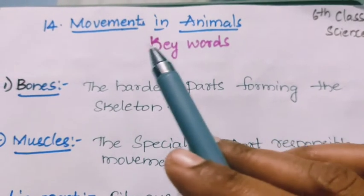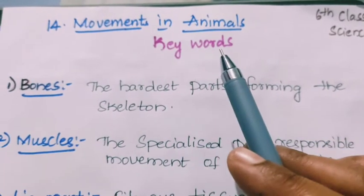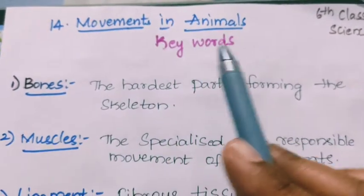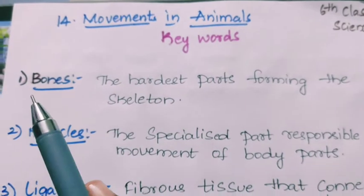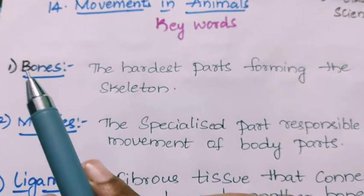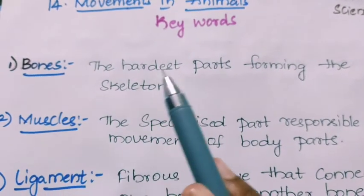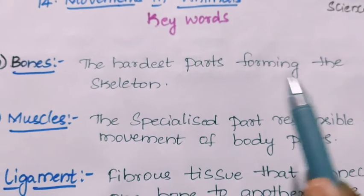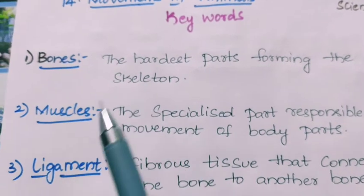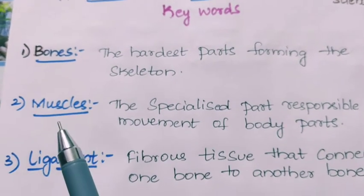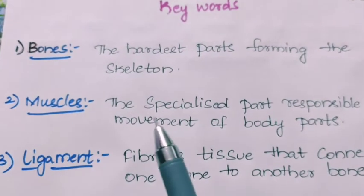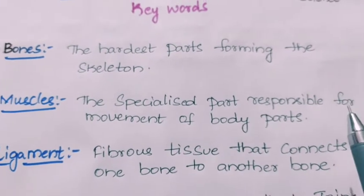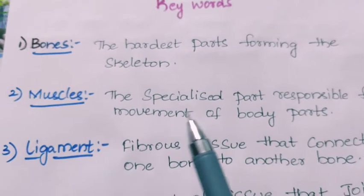Hello students, today we will discuss the keywords of the lesson: Movements in Animals. The first keyword is bones. Bones are the hardest parts forming the skeleton. Next, muscles. Muscles are the specialized part responsible for movement of body parts.